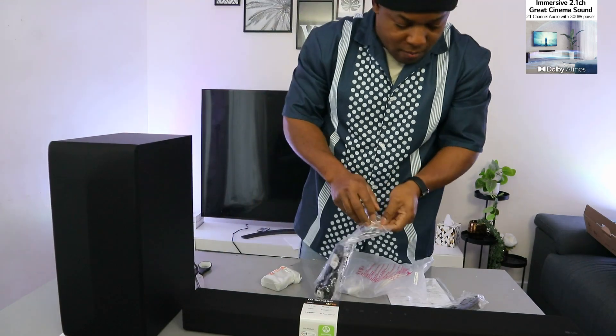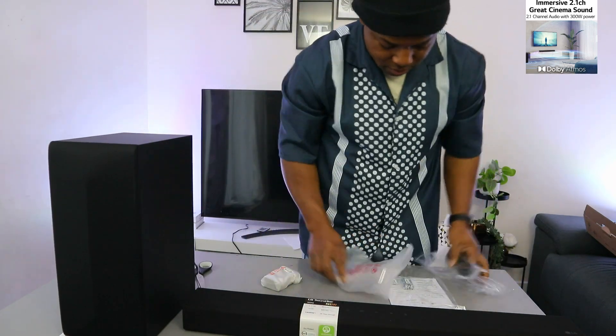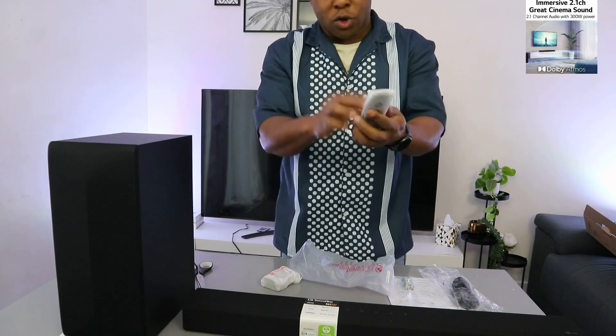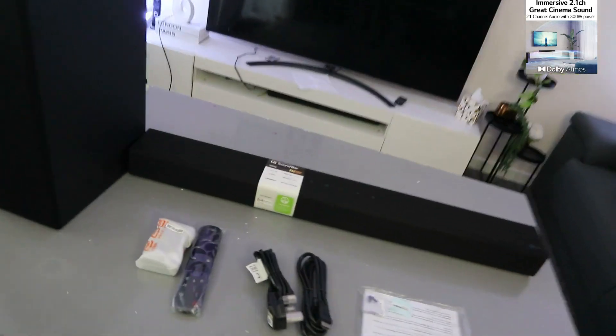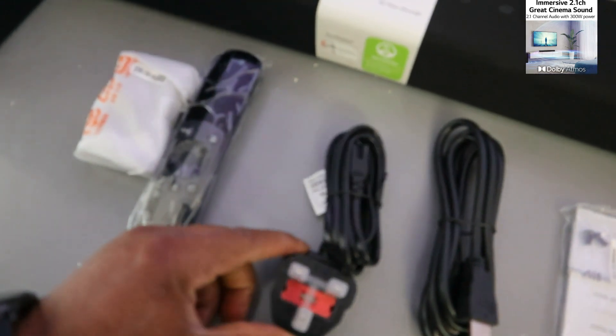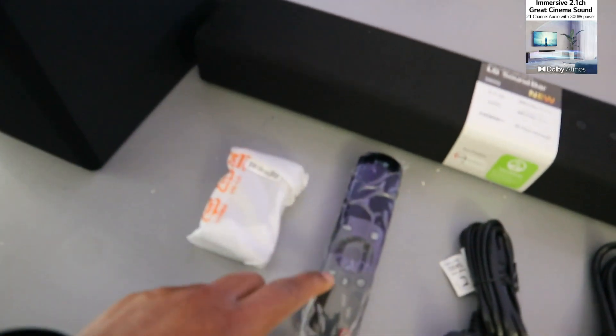The power cable, remote control, HDMI cable is included in the packaging. So what we have here, this is the subwoofer and this is the soundbar. Power cable, HDMI cable, wall mount, remote control, battery, and information pack. You also got two screws to mount this.